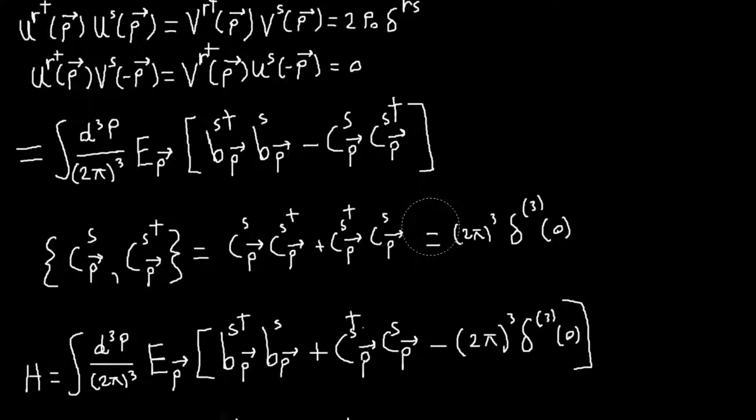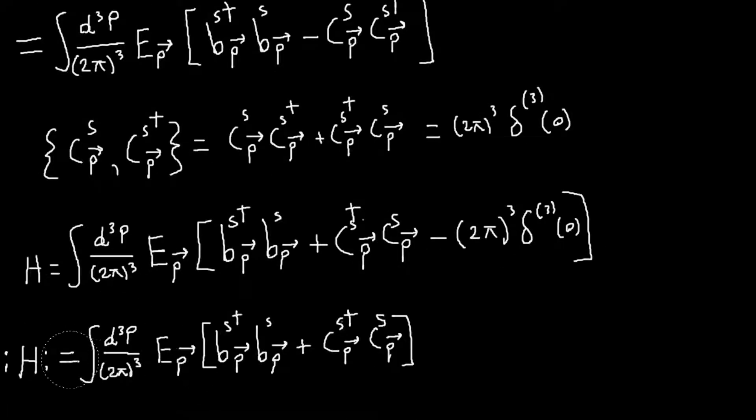So here we're also going to do a similar thing, only we're going to use the anti-commutation relation. And that way, when I switch these things, I'll get a plus sign instead. And I get a minus delta of zero. And again, we're going to throw this term away. And so after we've done that, so we'll just be left with this thing. So this is our normal ordered Hamiltonian.